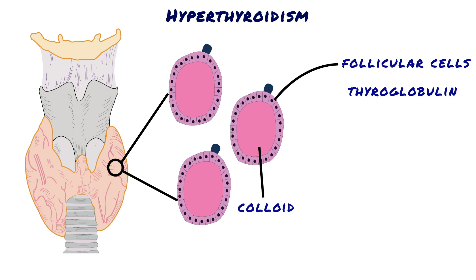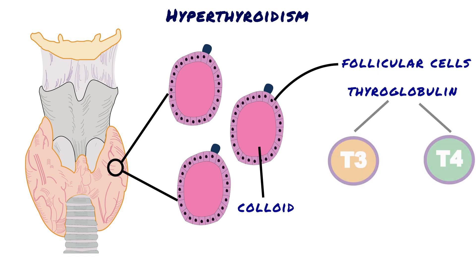Thyroid follicular epithelial cells convert thyroglobulin into T4 and lesser amounts of T3. T4 and T3 are released into the systemic circulation, where most of these peptides are bound to circulating plasma proteins, such as T4-binding globulin, for transport to peripheral tissues. The binding proteins maintain the serum unbound T3 and T4 concentrations within narrow limits, while ensuring the hormones are readily available to the tissues. In the periphery, the majority of free T4 is de-iodinated to T3. T3 binds to thyroid hormone nuclear receptors in target cells with tenfold greater affinity than T4 and has proportionately greater activity.